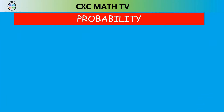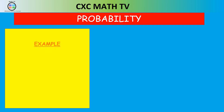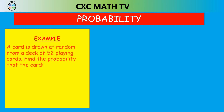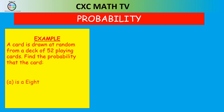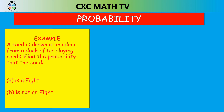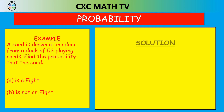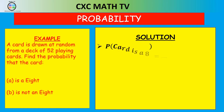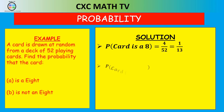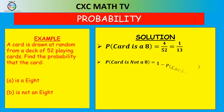Example: a card is drawn at random from a deck of 52 cards. Find the probability that the card is an 8, and that the card is not an 8. To find the probability the card is an 8, there are four eights in the pack — eight of hearts, clubs, diamonds, and spades — and 52 cards total, so it's 4 divided by 52, which is 1 over 13.